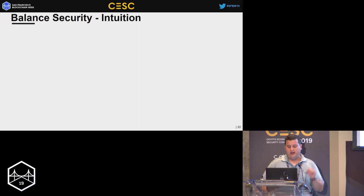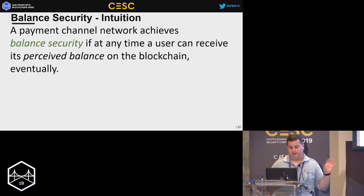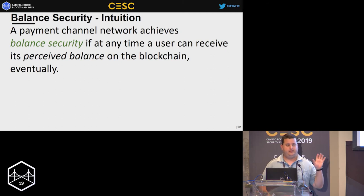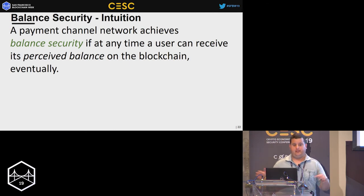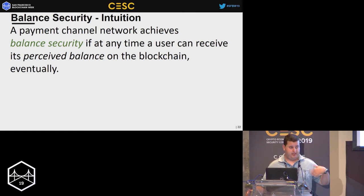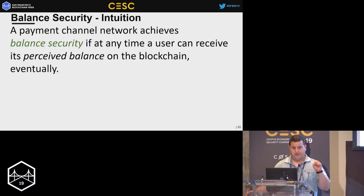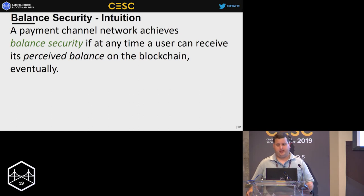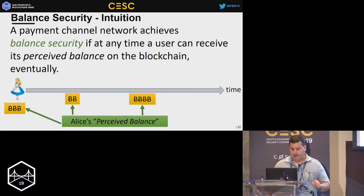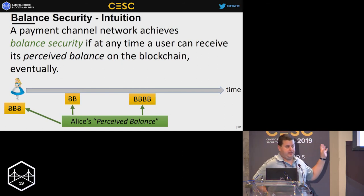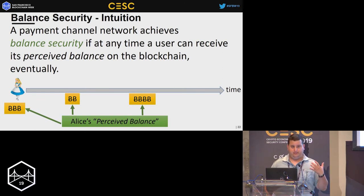Balanced security: the intuition is that every user in the system can say 'show me the money' — they can state their perceived balance, the money they have across all open channels. By placing a series of transactions on-chain, they can actually receive that perceived balance. If Alice, Bob, Dave, Carol, and everyone in the network can receive their perceived balance on-chain, we say the payment channel network achieves balanced security. Alice knows her perceived balance every moment during execution, and through some algorithm placing transactions on-chain, she can actually receive it.